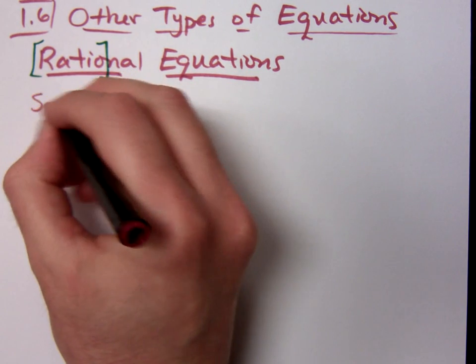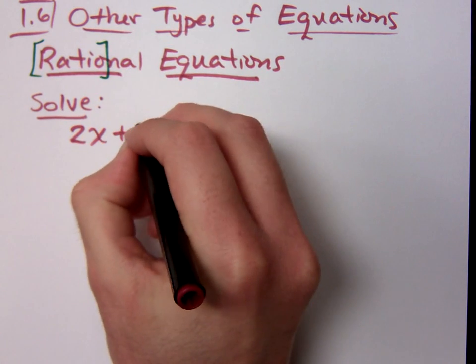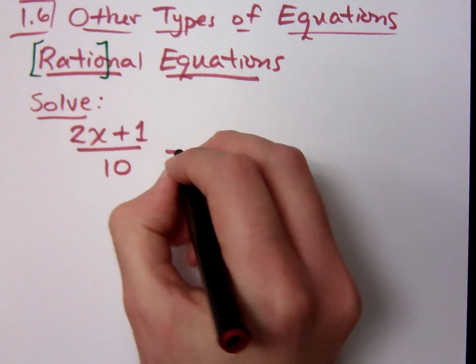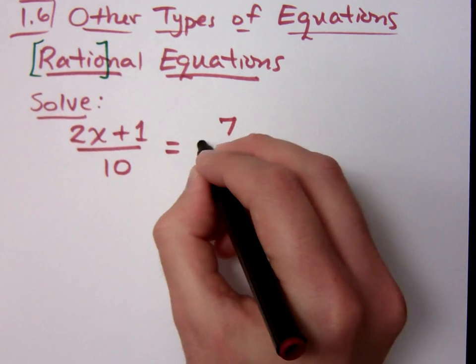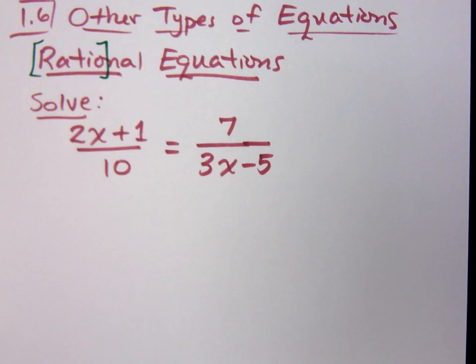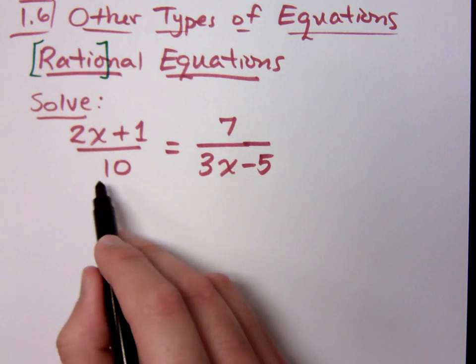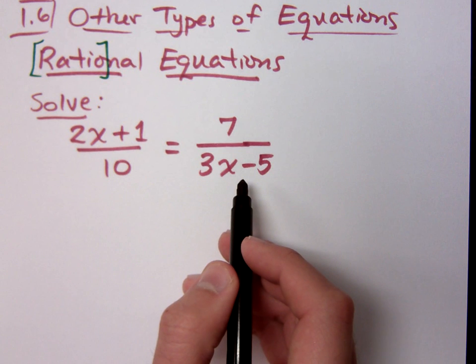Now, when we solve these guys, since they are fractions, it's all about how do I get rid of the fractions because I don't like the fractions. So I've got fractions here, and I don't like them. How do I get rid of them? We can find a common denominator or multiply everything times that. Now, look at these denominators. Do 10 and 3x minus 5 have anything in common? No.